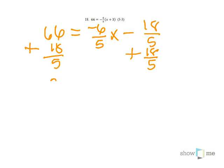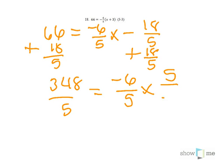you get 348 over 5 equals negative 6 over 5x. So to get rid of the negative 6 over 5, you multiply by the opposite, 5 over negative 6. And that cancels, leaving you with x on the right.